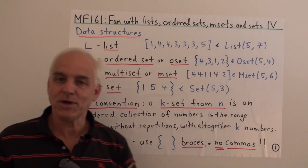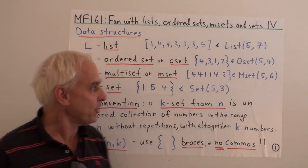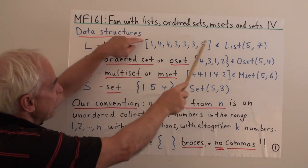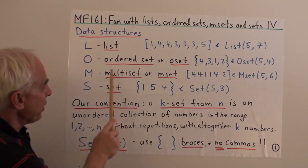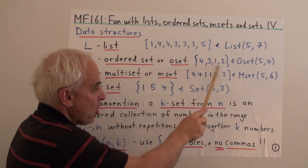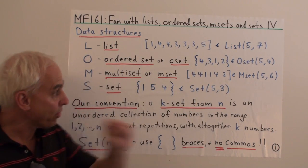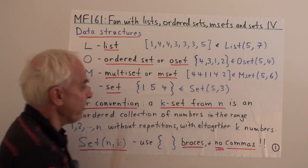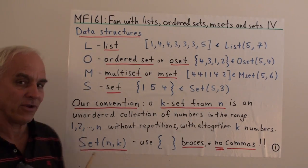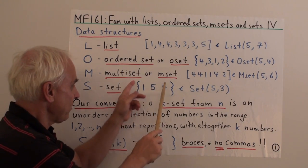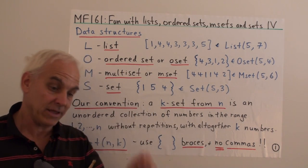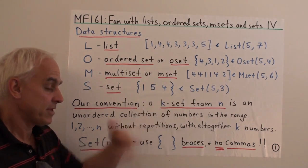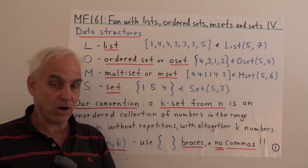A lot of what we're going to be doing today will be quite familiar. A list uses square brackets and commas. An ordered set uses braces and commas, representing that it's still ordered. A multi-set uses square brackets without commas. And our convention for a set is braces — representing that repetitions are not allowed — and no commas, telling us that rearrangements are allowed.